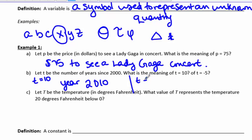If t is equal to negative 5, looking at negative 5 years since 2000 or 5 years before 2000, so that would be the year 1995.